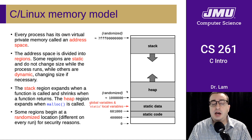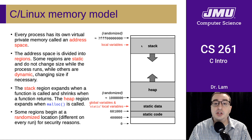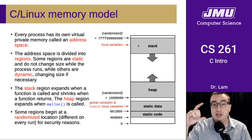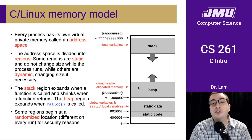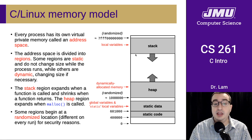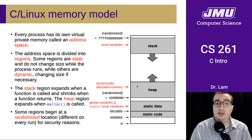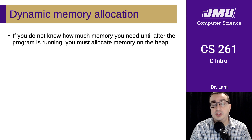In C, global variables and static local variables are generally placed inside the static data region. Local variables to functions are stored on the stack inside the region allocated for each invocation of the function. Any dynamically allocated memory is stored in the heap. Generally, we store data of known fixed size in static data and on the stack, and anything we don't know the size of in advance we store on the heap. This is called dynamic memory allocation — what you were doing with the new keyword in Java.